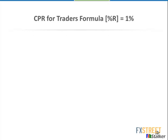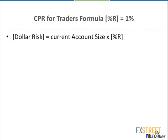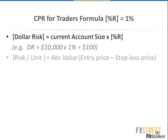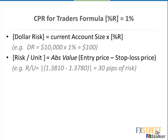Let me introduce the CPR formula for traders — a very simple formula for Forex that allows you to calculate position size and risk. I suspect more than 50% of people don't use these formulas, even those two or three years into trading. So, basic risk management: if I use 1%, my dollar risk is defined as the current account size times 1%. If my current account size is $10,000, that's $100. The risk per unit is the absolute value of the entry price minus the stop loss price — the number of pips I risk. With 30 pips of risk, entry at 138.10 and stop at 137.80.